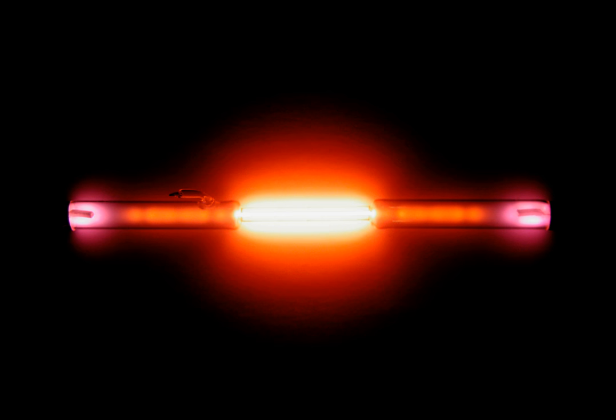The noble gases glow in distinctive colors when used inside gas discharge lamps, such as neon lights. These lights are called after neon but often contain other gases and phosphors, which add various hues to the orange-red color of neon. Xenon is commonly used in xenon arc lamps which, due to their nearly continuous spectrum that resembles daylight, find application in film projectors and as automobile headlamps.